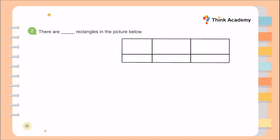Let's take a look at question number 2: how many rectangles are in the picture below? This is a composite figure. In order to find all the rectangles, we need to count in order — meaning from left to right, top to bottom. We are going to split the figure into row 1 and row 2. In row 1, there are 3 single rectangles.